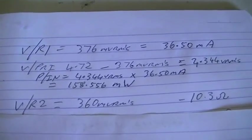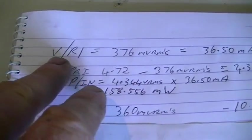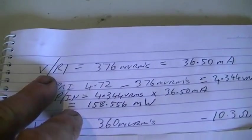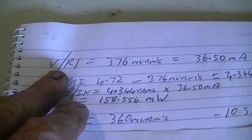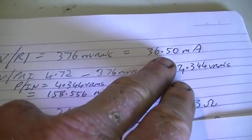Okay, so back to our test results. We had 376 millivolts RMS across R1, which of course is our 10.3 ohm resistor. That gives us a current of 36.5 milliamps.